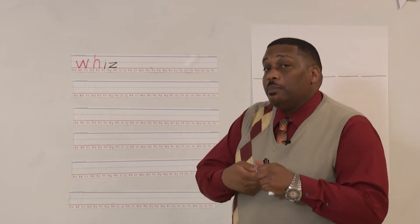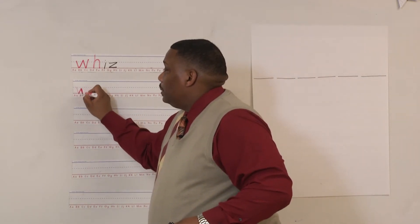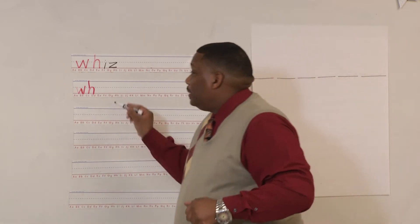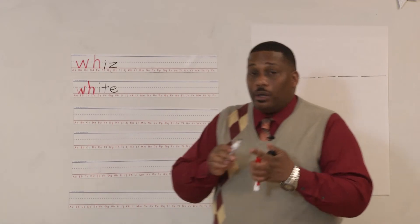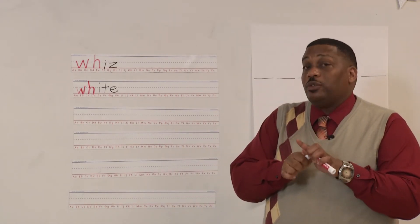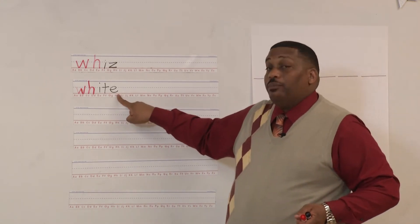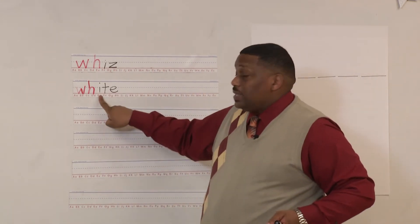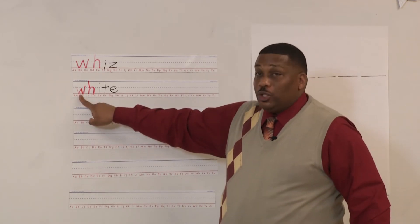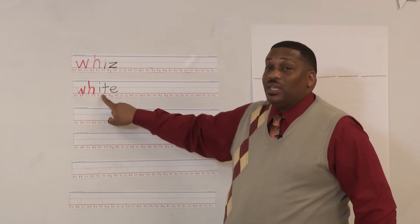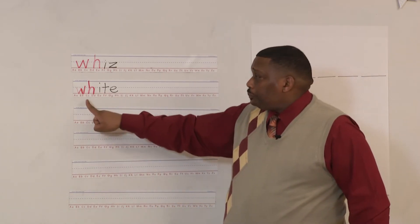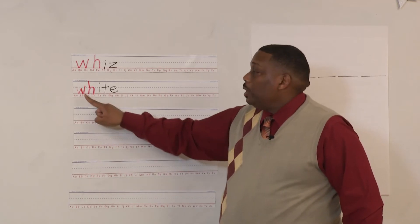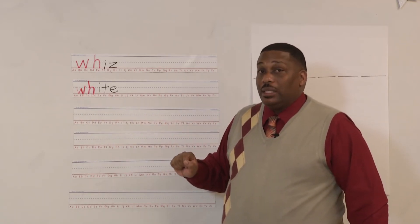Let's practice another one. My special sound WH is in red; the rest is in black. I have two vowels — this is a magic E word. The E at the end jumps over the consonant and makes the vowel say its name, so this I says its name: I. Let's blend: wh-ite — white! One more time — white!